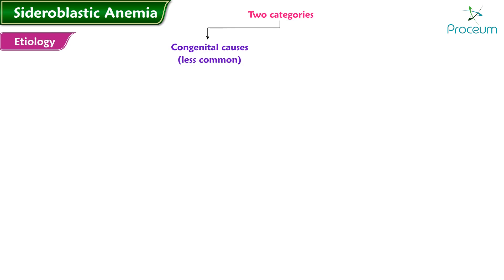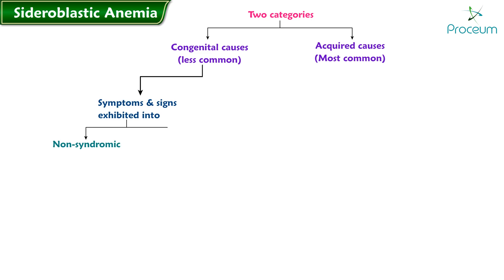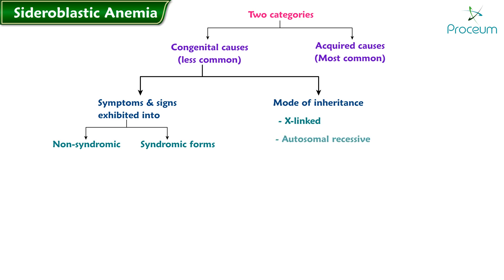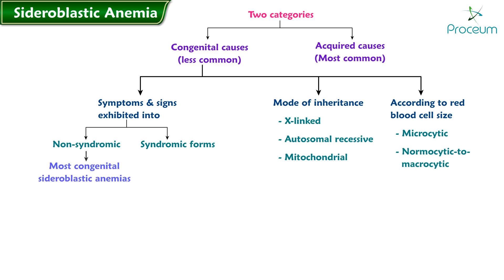Etiology: there are many causes of sideroblastic anemia. The two big categories are congenital causes, which are less common, and acquired causes, which are most common. The congenital sideroblastic anemias can be subdivided depending on their symptoms and signs into non-syndromic and syndromic forms, by their mode of inheritance — X-linked, autosomal recessive, or mitochondrial — or according to red blood cell size: microcytic or normocytic to macrocytic.